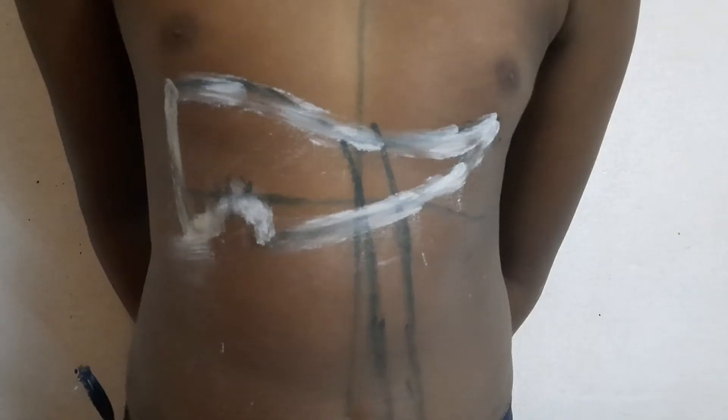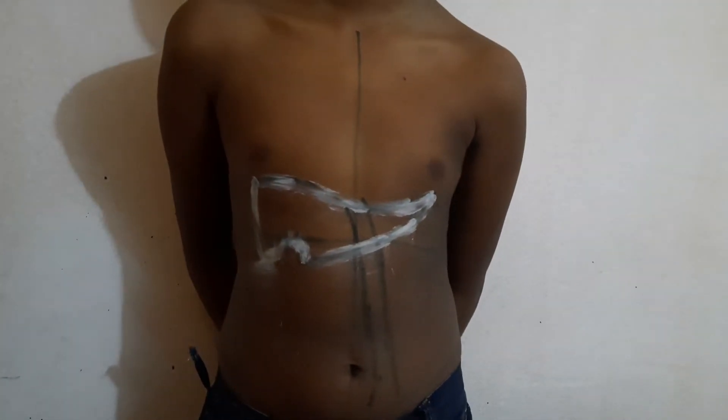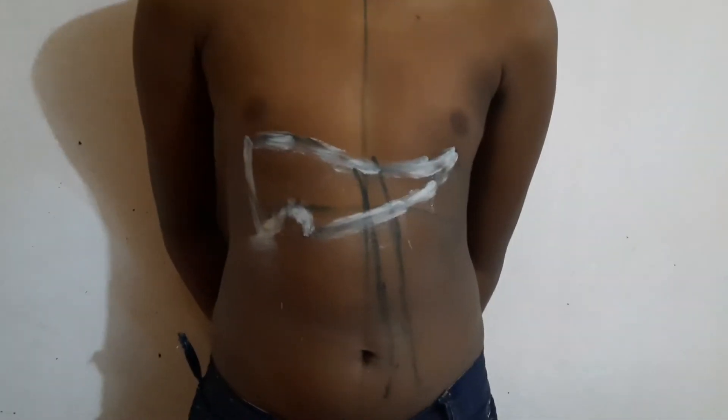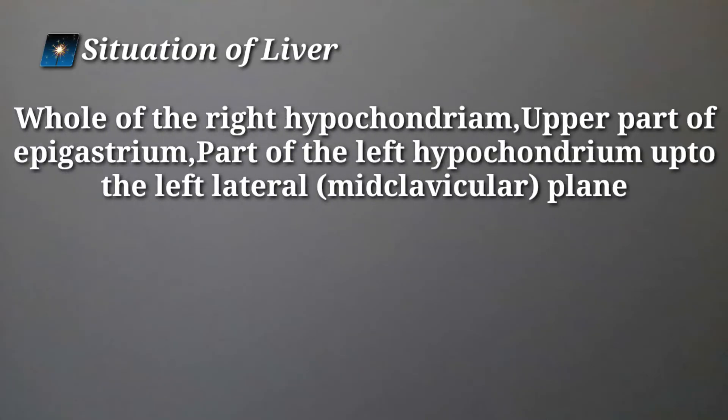Using these 3 points, we can do the liver surface marking easily. The liver surface marking is now done. The liver occupies the whole of the right hypochondrium, the upper part of the epigastrium, and part of the left hypochondrium up to the left lateral plane.